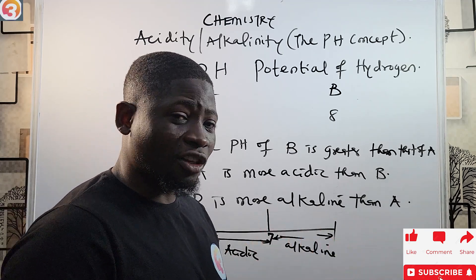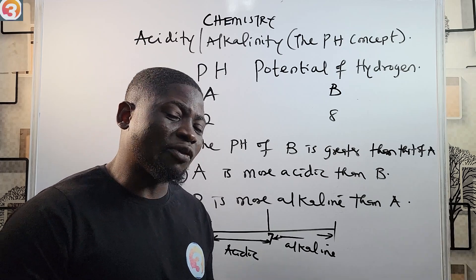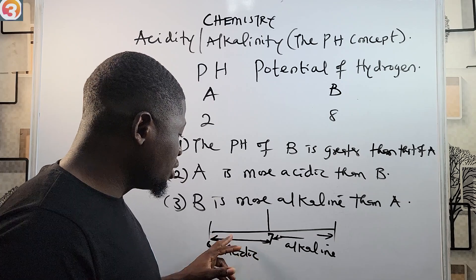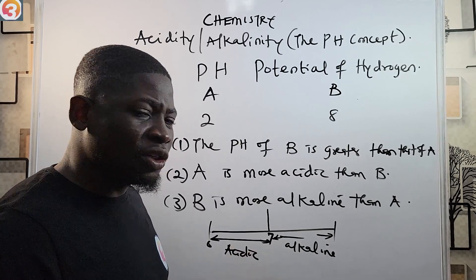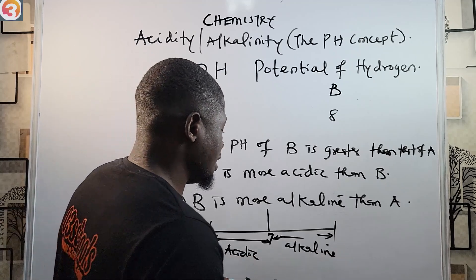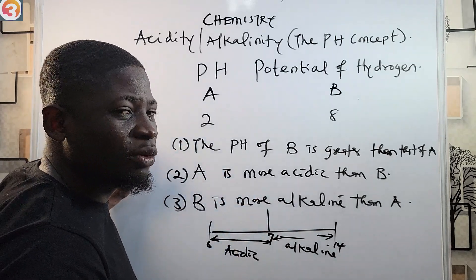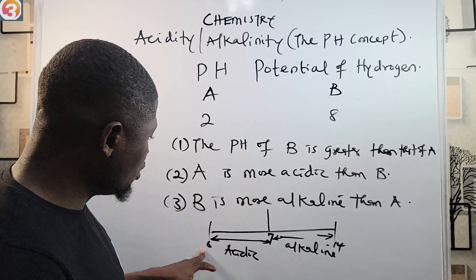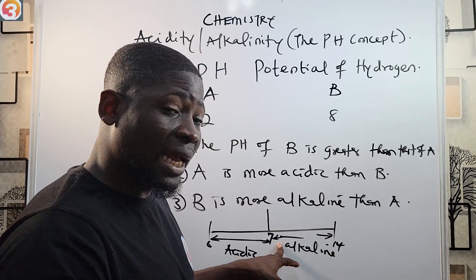When the pH is higher, it is more alkaline — not more acidic. Don't get it twisted. To determine if a substance is acidic, check if its pH falls between 0 and 6.99. If it falls above 7 up to 14, the substance is alkaline. Seven is the neutral point.